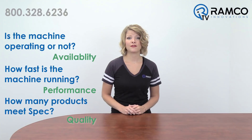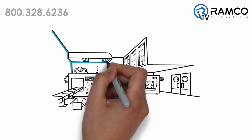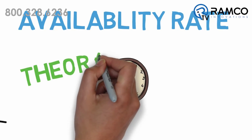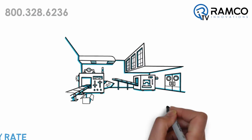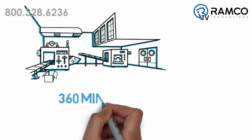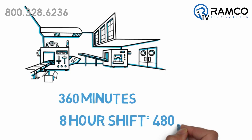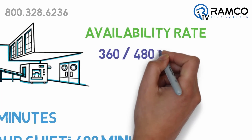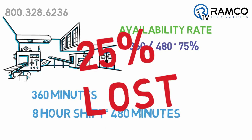We start this calculation with availability. If the machine is producing product while it was available to the production team, we know that it was running. The availability rate indicates the relationship between the time that the machine could theoretically have been in production and the time that there was actual output. For example, if the machine delivers 360 minutes of output during an 8-hour shift, which is 480 minutes, then the availability rate is 360 divided by 480, or 75%. In other words, 25% of the available time is lost.